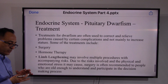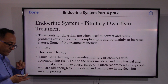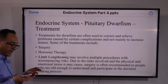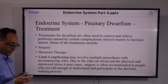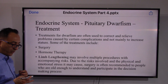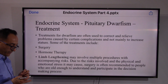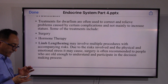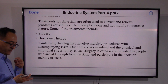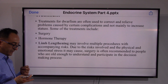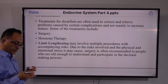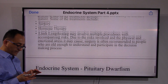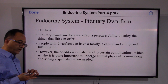As far as treatment goes, the focus is not to get rid of dwarfism but to minimize the damage it brings. Treatments are used to correct and relieve problems caused by certain complications, and not mainly to increase stature. Surgery and hormone therapy are options. Limb lengthening involves multiple procedures and carries risk — it can be emotionally stressful, the consent of the adult is required, and it is done only in rare cases.